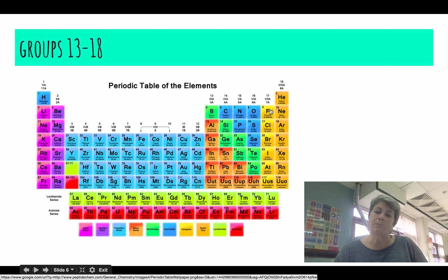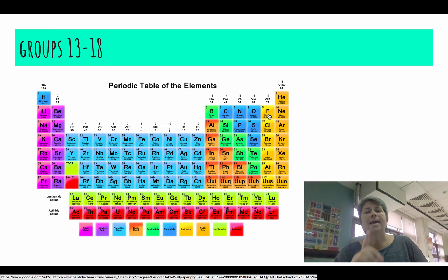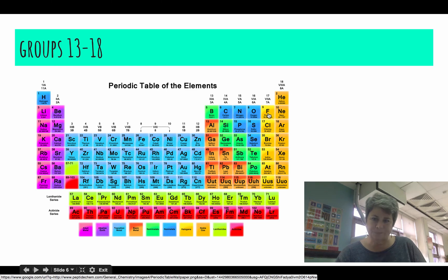Then, group seventeen, which starts out with fluorine. Fluorine family, exactly. Except, they also have another name. They're sometimes called the halogens.